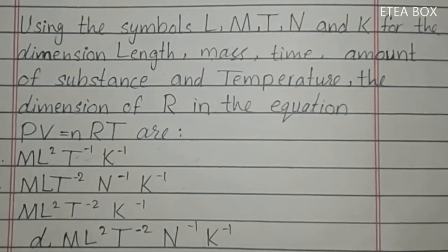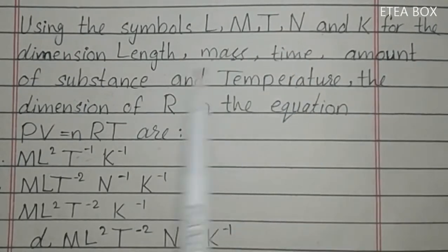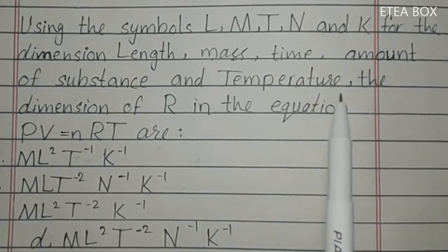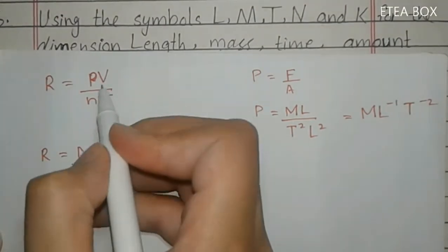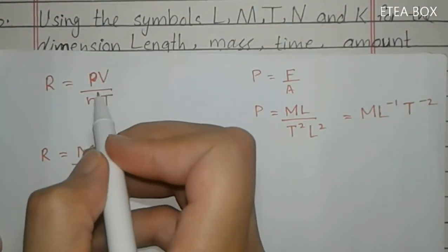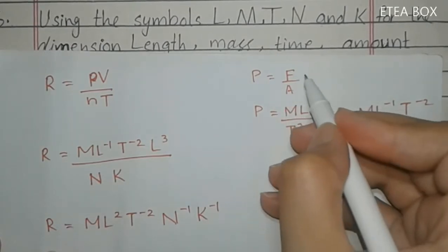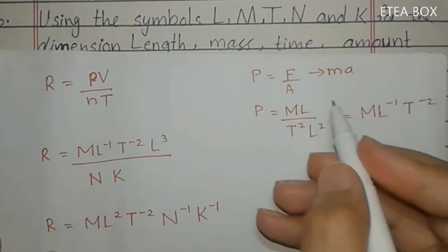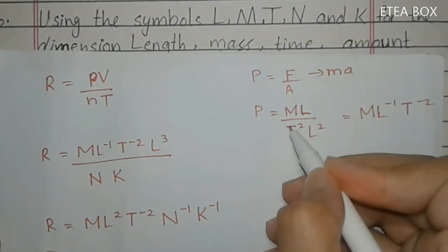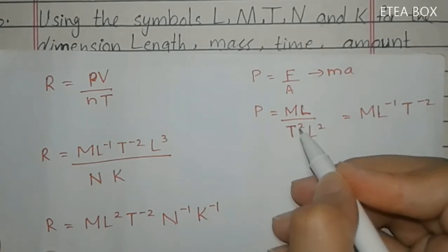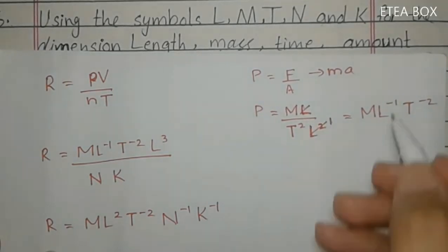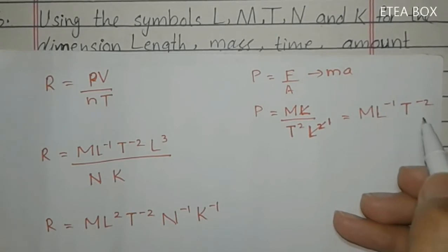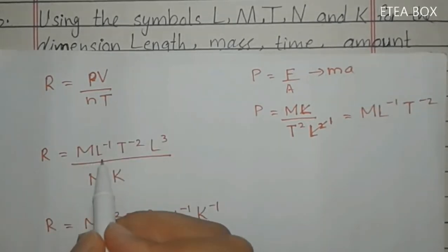Sixth MCQ: using symbols L, M, T, N, and K for length, mass, time, amount of substance, and temperature, find the dimension of R in PV = NRT. R equals PV divided by NT. Pressure equals force per area, and force equals mass times acceleration (M·L·T⁻²), divided by area (L²), giving pressure dimension as M·L⁻¹·T⁻².